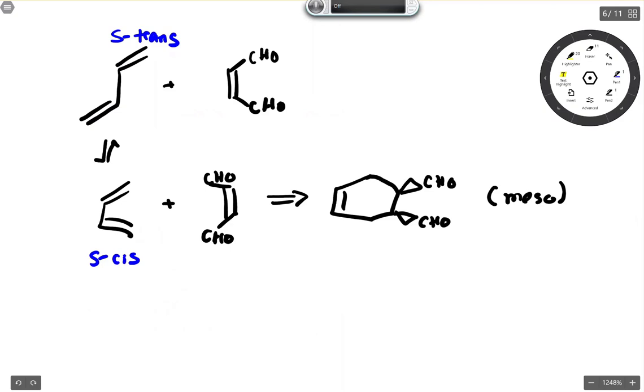Instead, we need to take the S-trans configuration and turn it into the S-cis, which is not a difficult task to do if there are no substituents at this position or at this position.